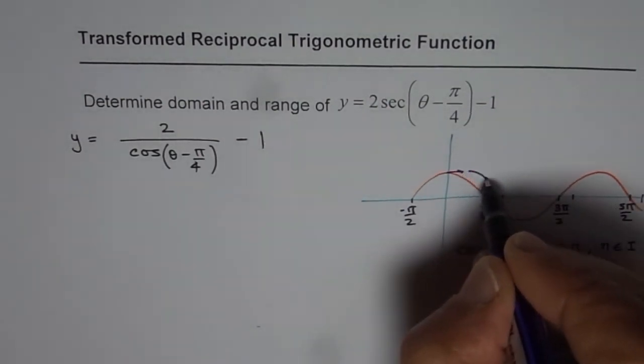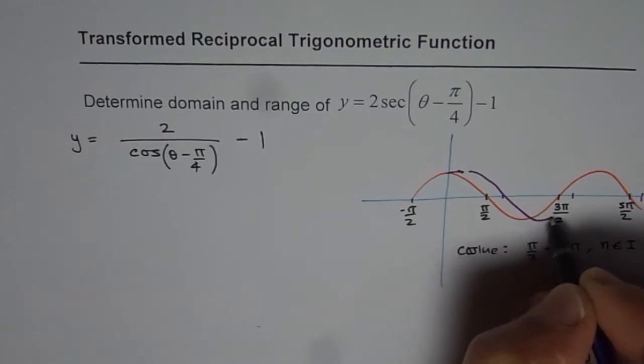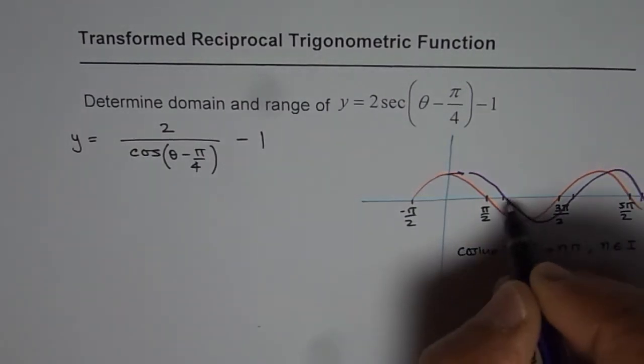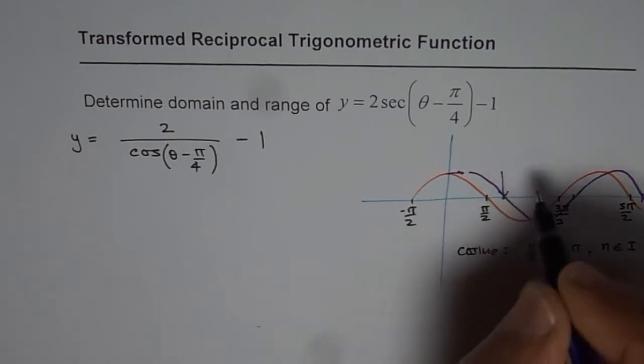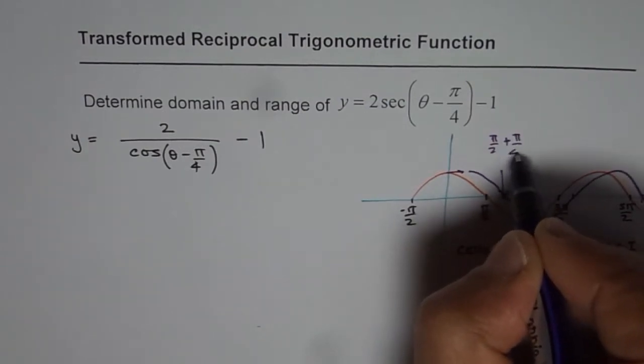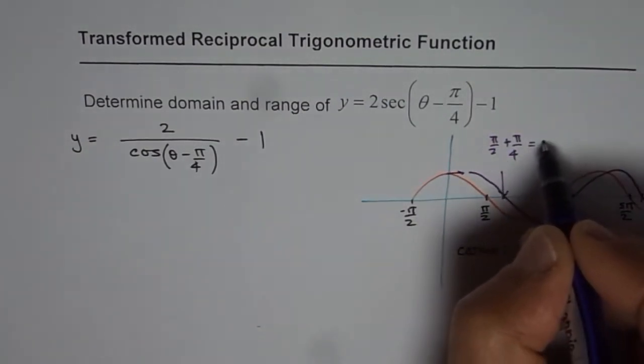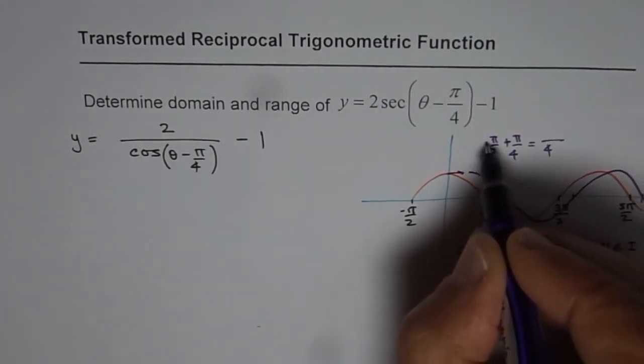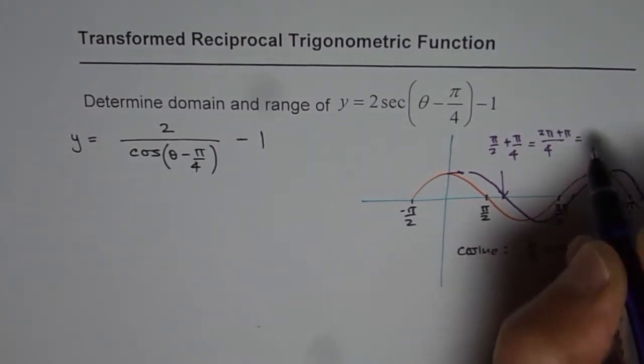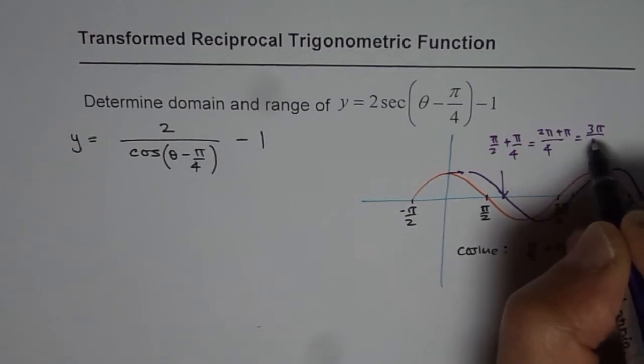So the transformed function will be kind of like this. The zeros will now be at pi by 2 plus pi by 4, which is when you do addition, you can write 2 pi plus pi, which is 3 pi by 4. So that is the first zero.